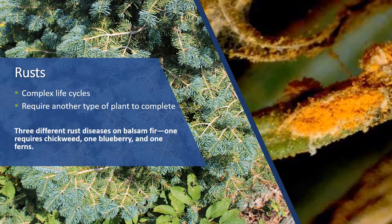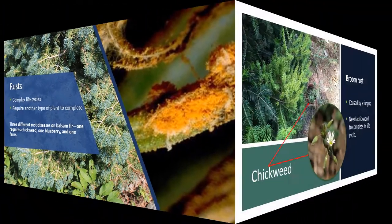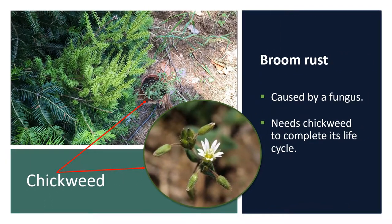Removing the alternate host can be an effective way to reduce disease pressure without fungicidal sprays. Here we see broom rust, which is caused by a fungus that needs chickweed to complete its life cycle. Controlling chickweed in and around the field would reduce the number of rust spores in the area, leading to less broom rust in the plantation.